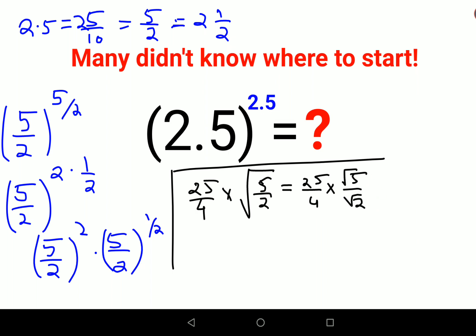We'll get 25 upon 4 times root 5 times root 2, which is root 10, upon root 2 times root 2, which is 2.